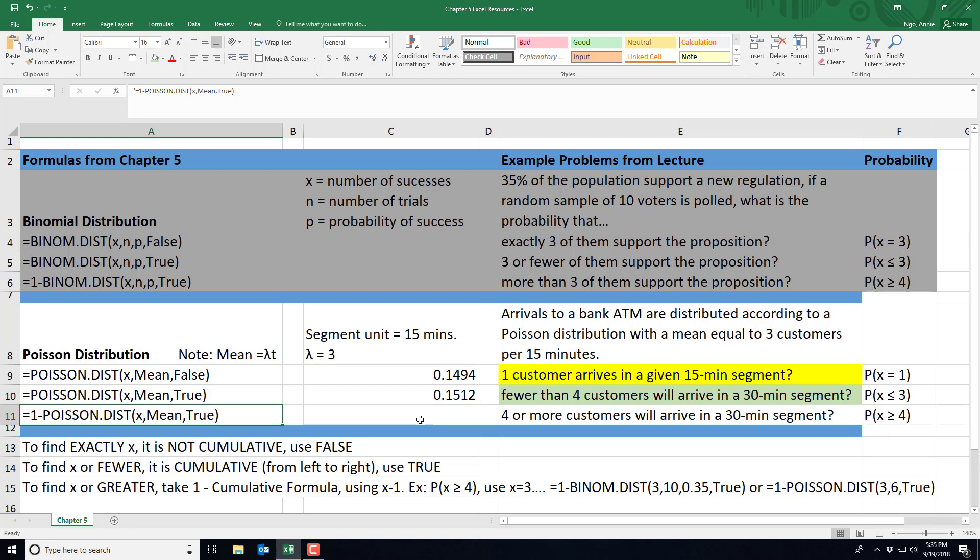Again, when we're looking at some number or greater, we're going to rely on our complement rule to find the probability. So I'm going to type in equals 1 minus the Poisson distribution. And because I want 4 or more, that means I don't want 3 or less. So I'm going to type in 3.